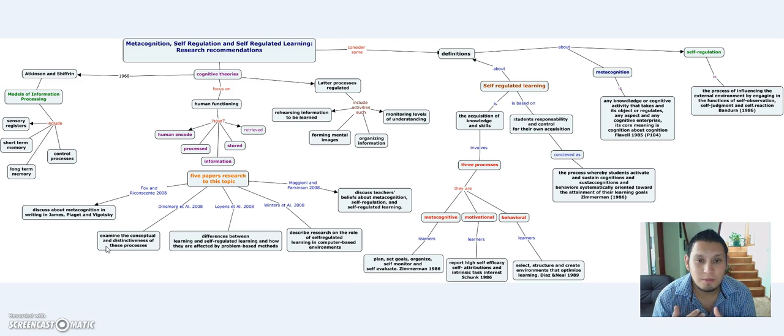Then we have Loyens et al. in 2008 about the difference between direct learning and self-regulated learning. What was that difference and how it affected problem-based methods?